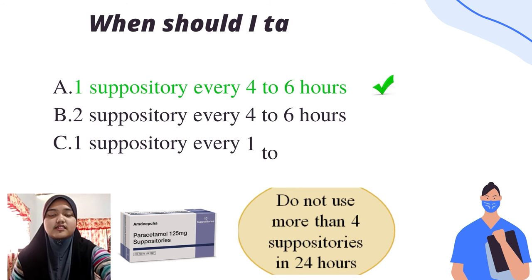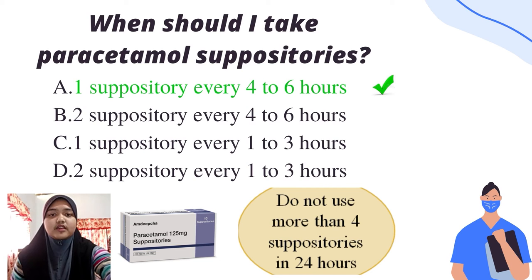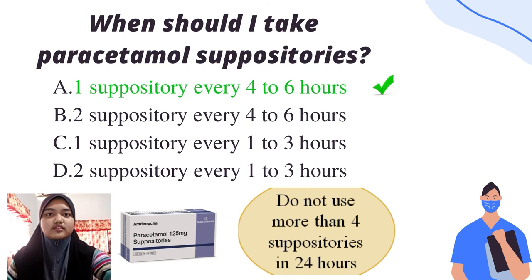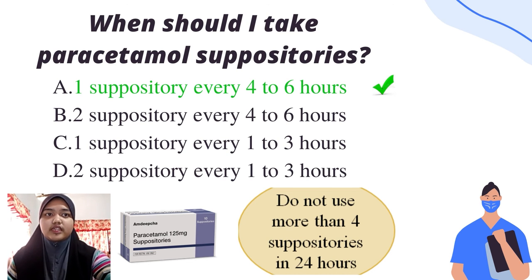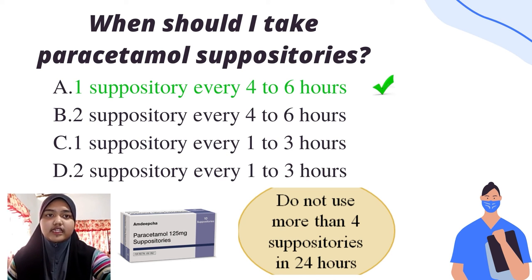The answer is A — 1 suppository every 4 to 6 hours. This is because paracetamol use is not recommended to exceed 10 consecutive days for adults and 5 days for children unless directed by a doctor. Paracetamol should also not be taken for more than 3 days in cases of high fever without medical advice. The usual adult dose is 500 mg every 4 to 6 hours, or 1 gram every 4 to 6 hours when needed, and the total daily dose should not exceed 4 grams.